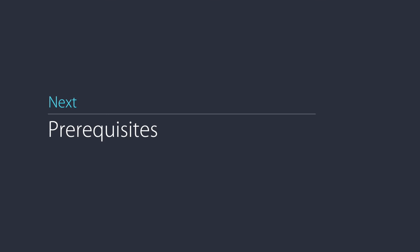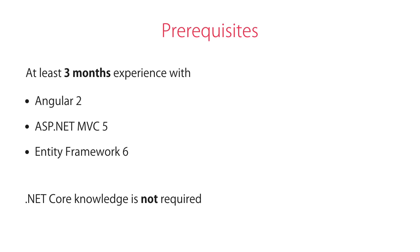Now that you know exactly what this course is and what it isn't, let's take a look at the prerequisites in more detail. In order to take this course, you should have at least three months experience with Angular 2, ASP.NET MVC 5, and Entity Framework 6. But you don't need any prior knowledge of ASP.NET Core or Entity Framework Core — I'm going to introduce you to these frameworks in a pragmatic way along the way.